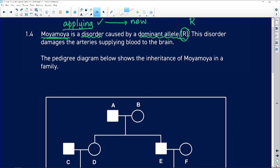So you're going to have this disorder Moyamoya if you have one dominant allele or two dominant alleles. One dominant allele and one recessive allele is still going to give you Moyamoya. The only way you're going to get away from it is if you've got two recessive alleles.